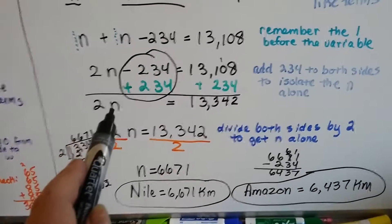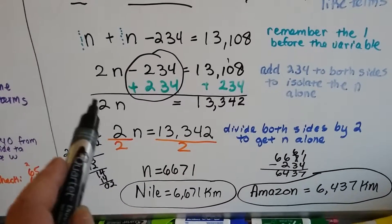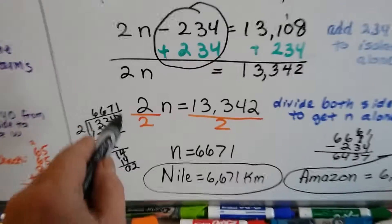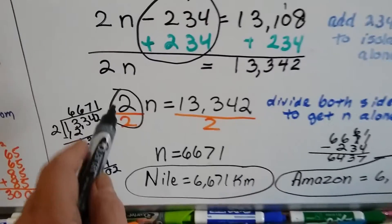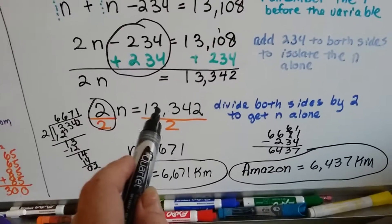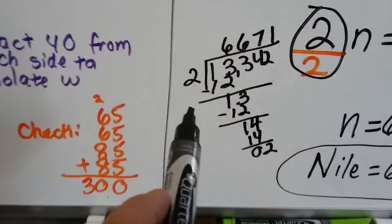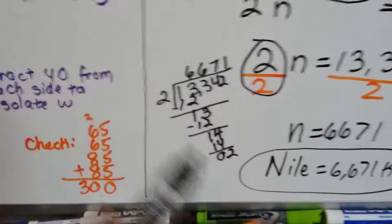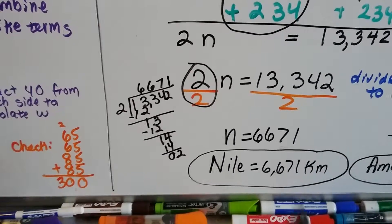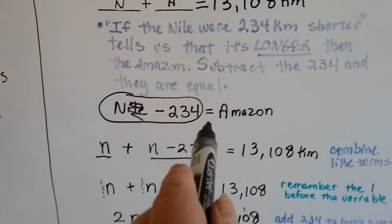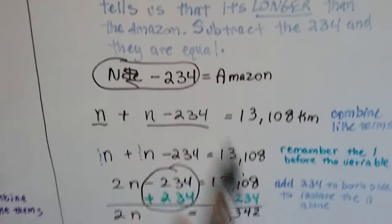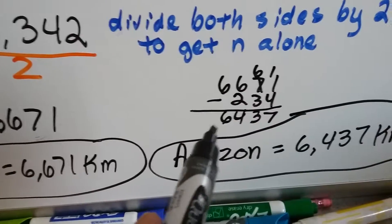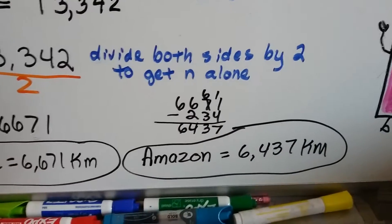2N means 2 times N, so the inverse is division. We divide both sides by 2. The 2s cancel and we have 1N. And 13,342 divided by 2 equals 6,671. So the Nile is 6,671 kilometers. For the Amazon, since it's 234 kilometers shorter than the Nile, we subtract: 6,671 minus 234 equals 6,437 kilometers.